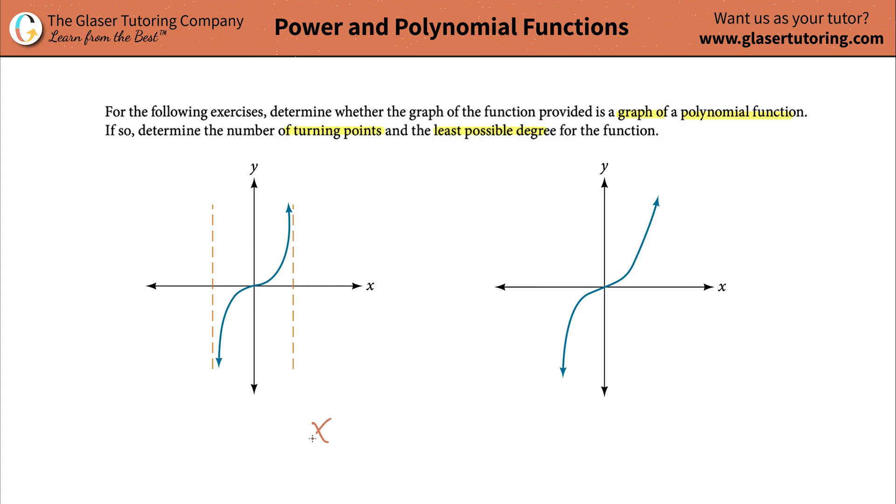First, I'm going to talk about the x values, or the domain. The x values have to be all real numbers. In other words, x, when you look at a graph, the x values have to go all the way out to negative infinity and it has to go all the way out to positive infinity. This has to be true for all polynomials.